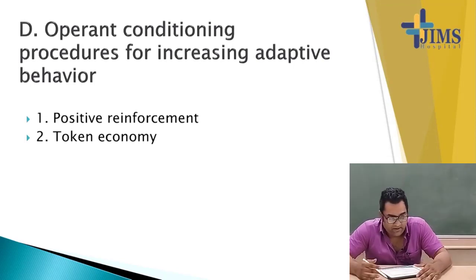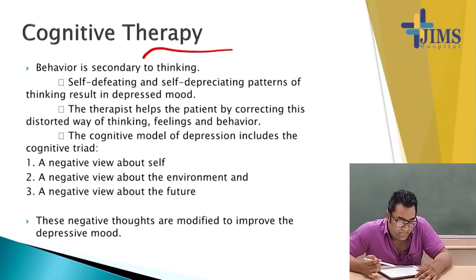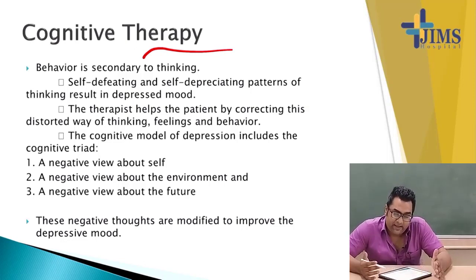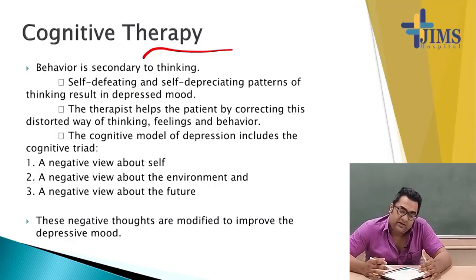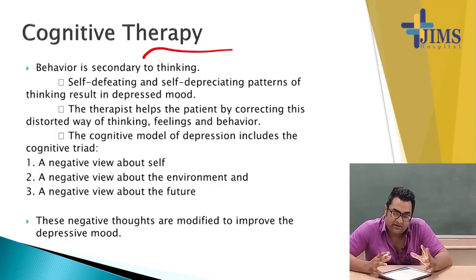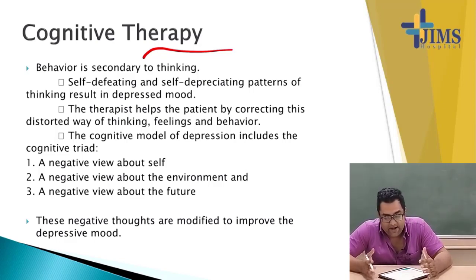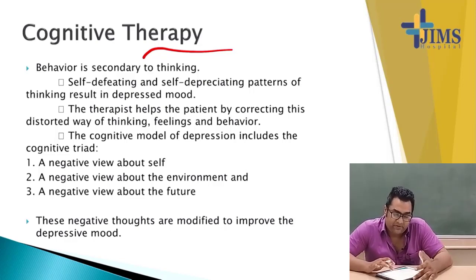Operant conditioning introduced by B.F. Skinner involves positive reinforcement, negative reinforcement, and punishment, and token economy. Cognitive therapy is based on the idea that behavior is secondary to thinking, and self-defeating and self-depressing patterns of thinking result in a depressive mood. The therapist helps the patient by correcting this distorted way of thinking, feelings, and behavior. The cognitive model of depression includes the cognitive triad: negative view of self, negative view of the environment, and negative view of the future, which are modified to improve the depressive mood.